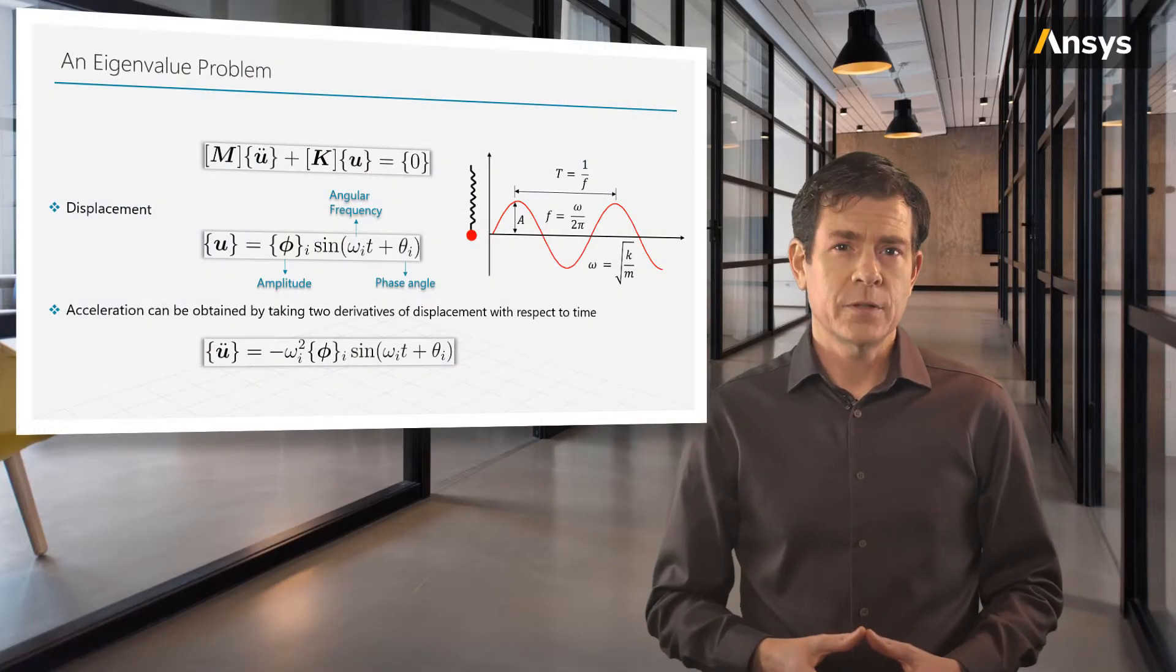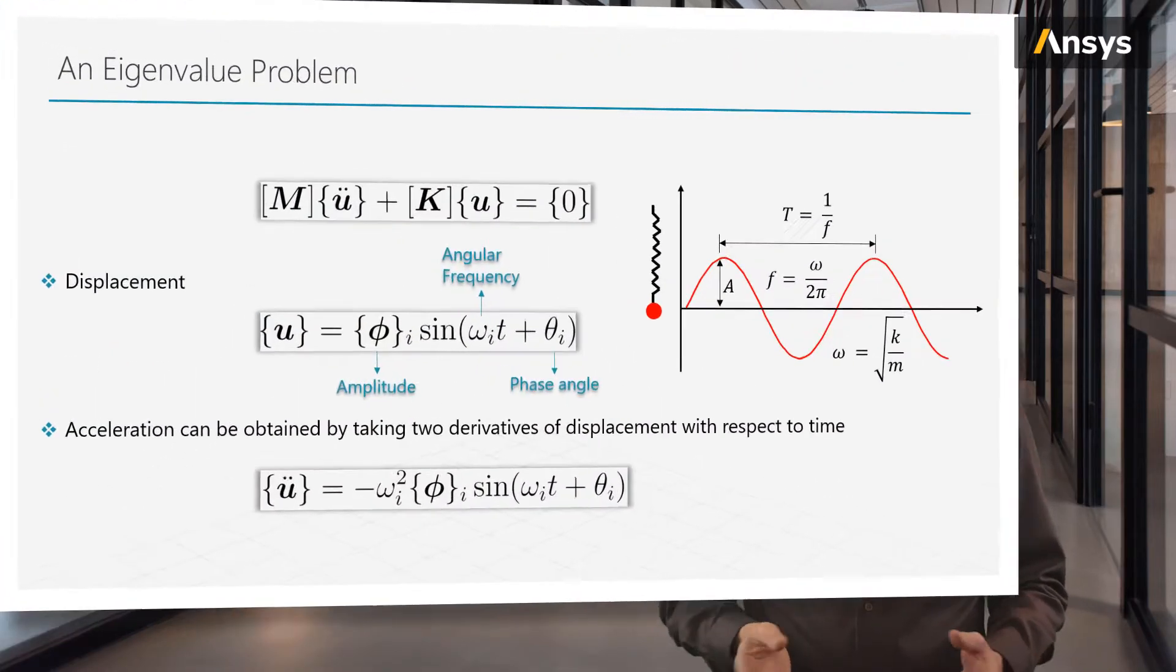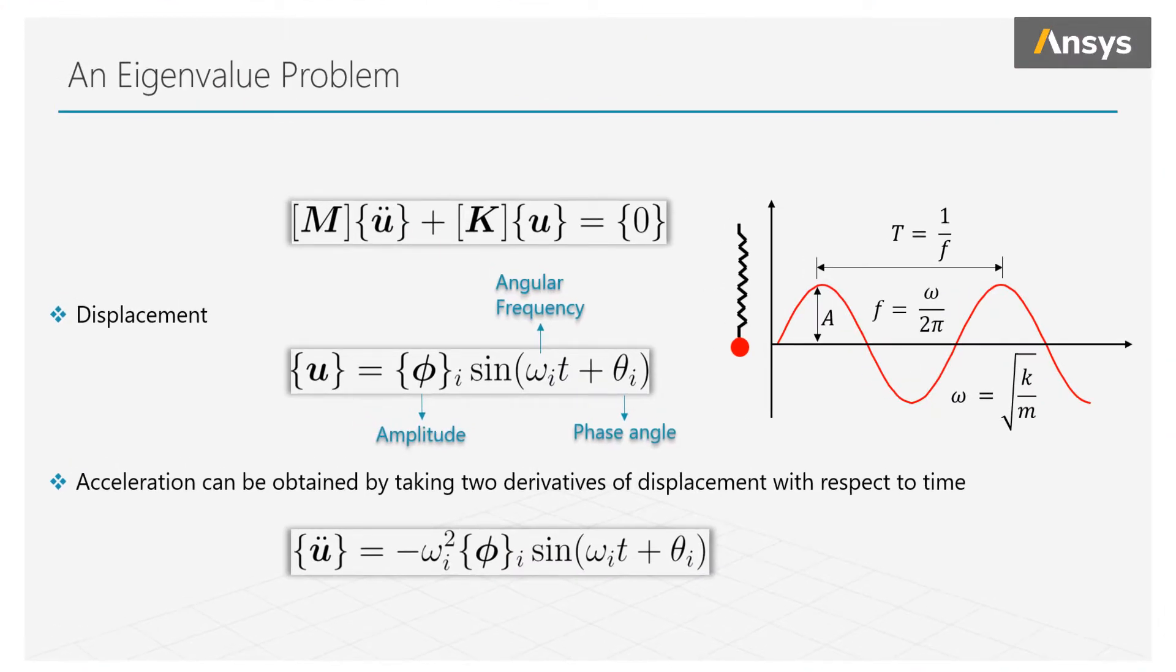Recalling from our preceding lesson for modal analysis, we're assuming harmonic motion for every point of the structure. Let's write the displacement in harmonic form. We use phi to be the amplitude, omega is the angular frequency, and theta is the phase angle. We take two derivatives of the displacement with respect to time, and that will give us the acceleration.